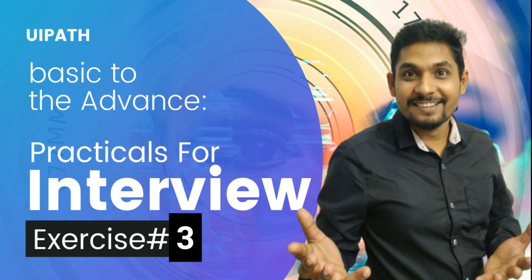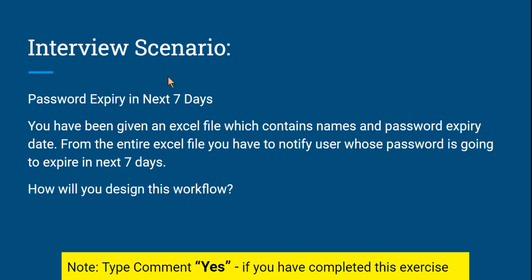Welcome to Exercise 3 — this will be very interesting. The interview scenario is password expiry in the next seven days. You have been given an Excel file containing names and password expiry dates. From the entire Excel file, you have to notify users whose password is going to expire in the next seven days.